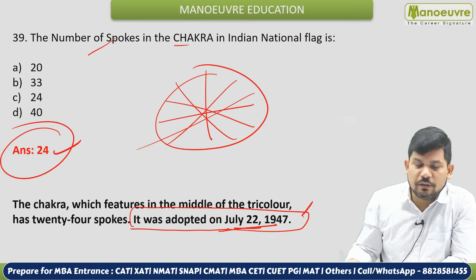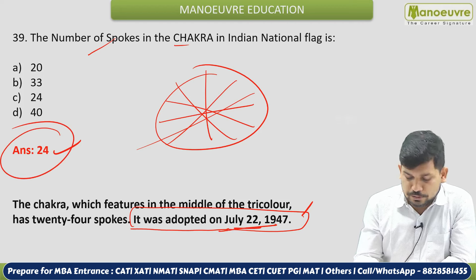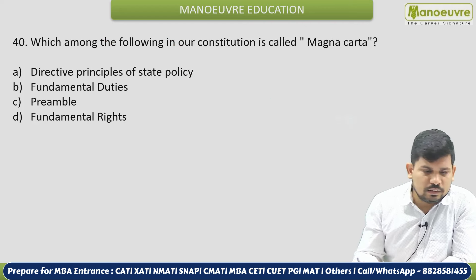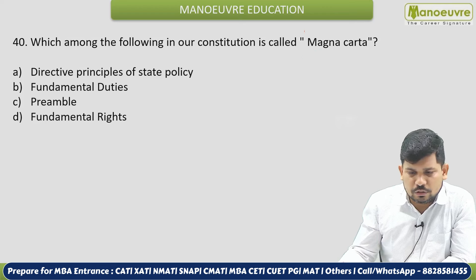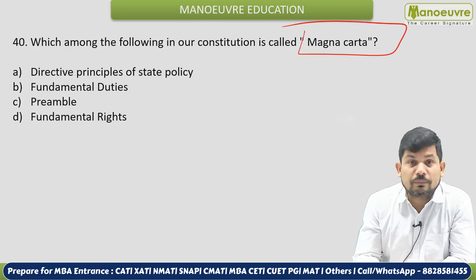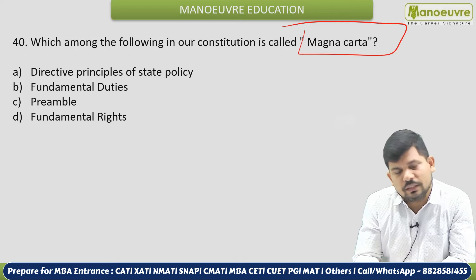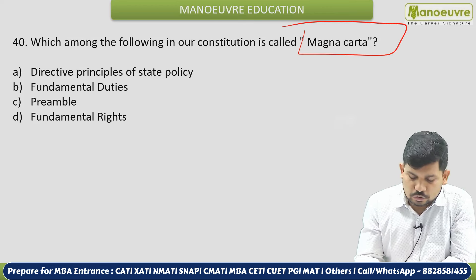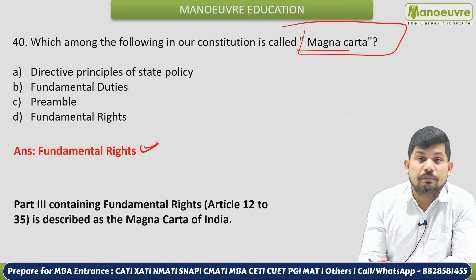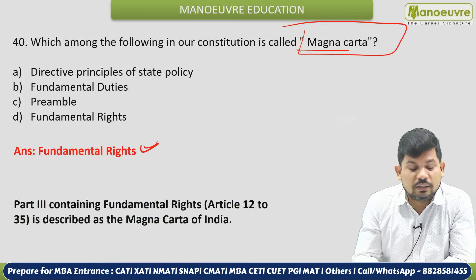Next: Which part of our Constitution is called the Magna Carta? Options: Directive Principles of State Policy, Fundamental Duties, Preamble, or Fundamental Rights? The correct answer is Fundamental Rights. Fundamental Rights are treated as or called the Magna Carta — meaning the rights of the people.